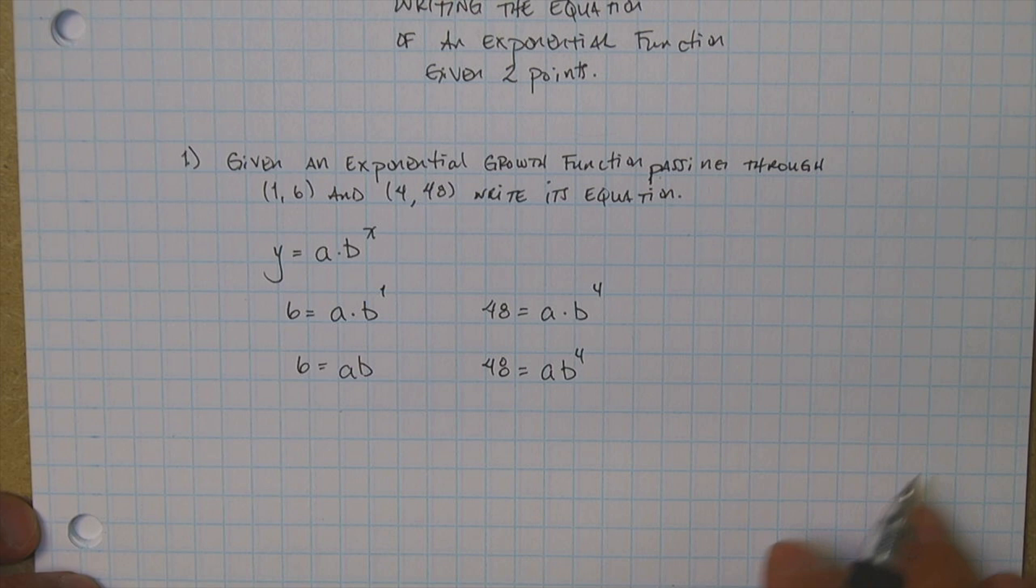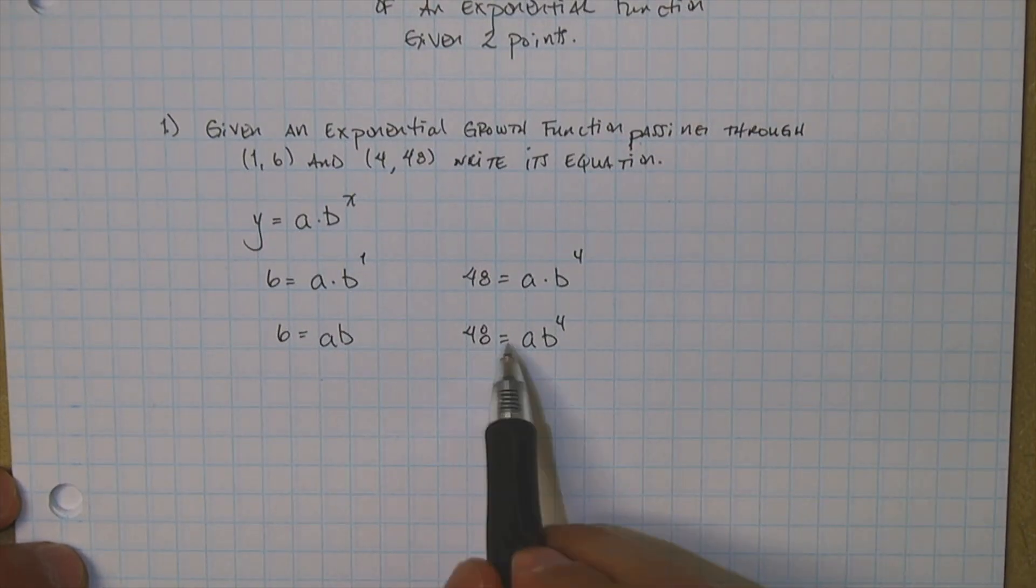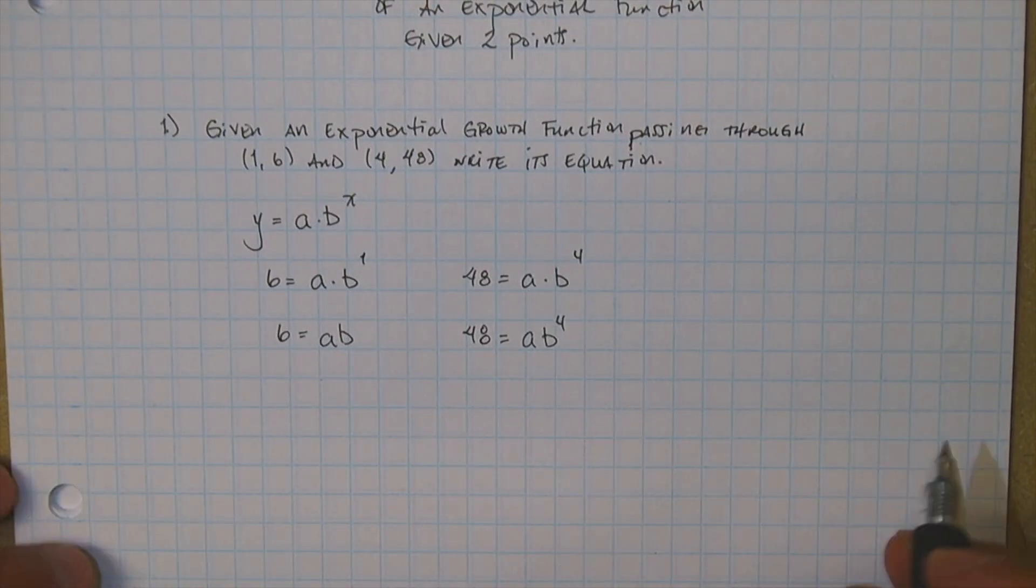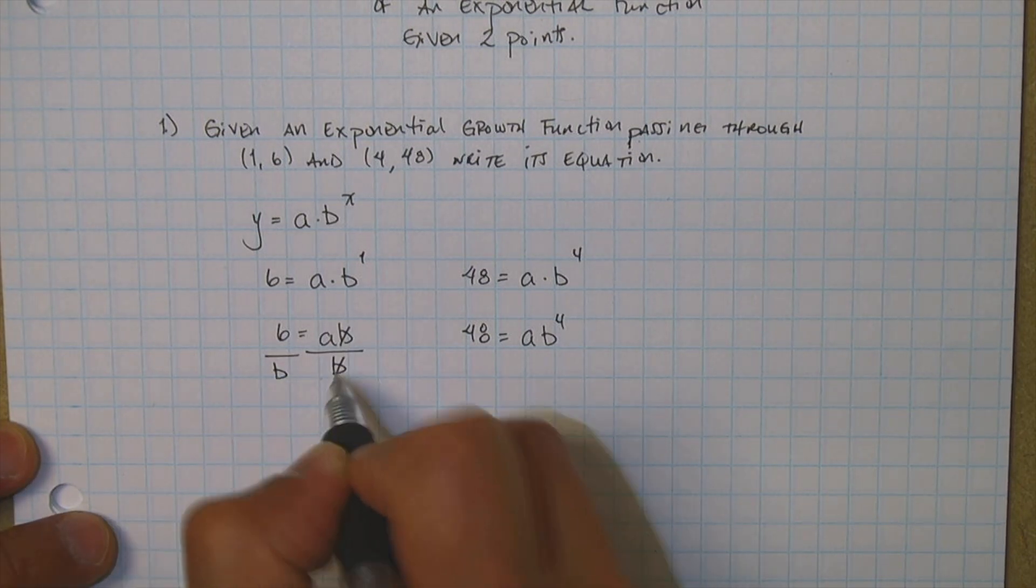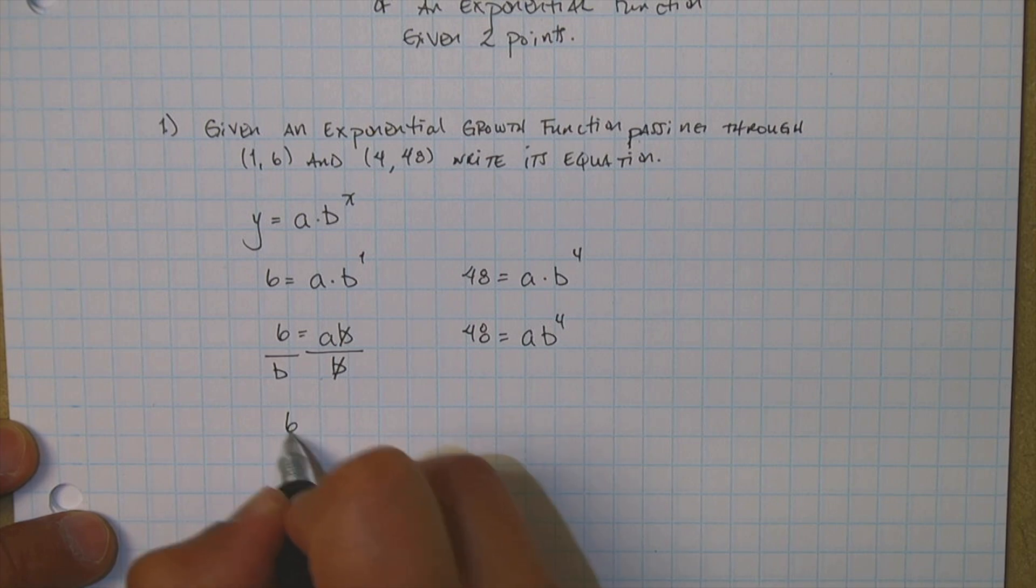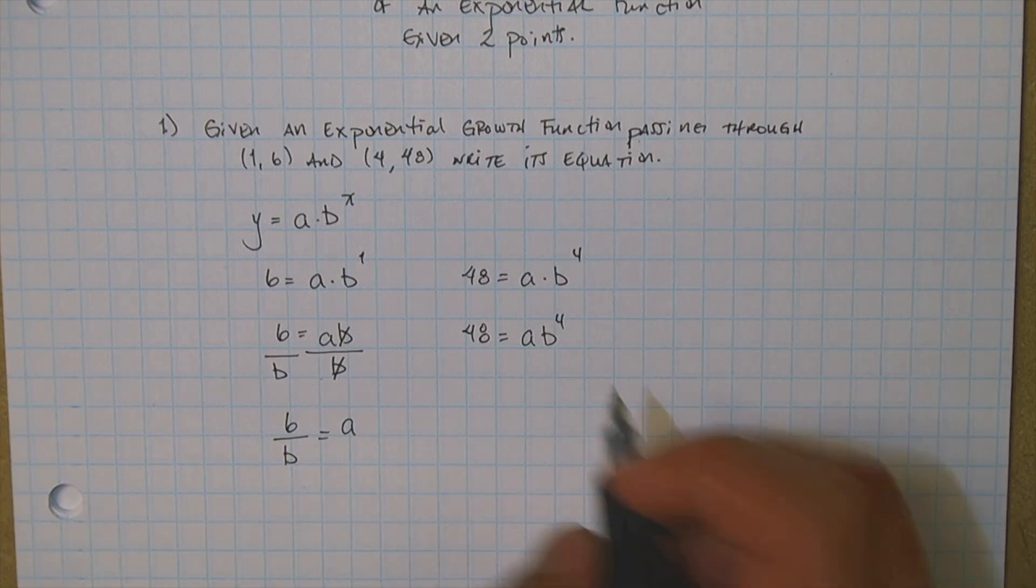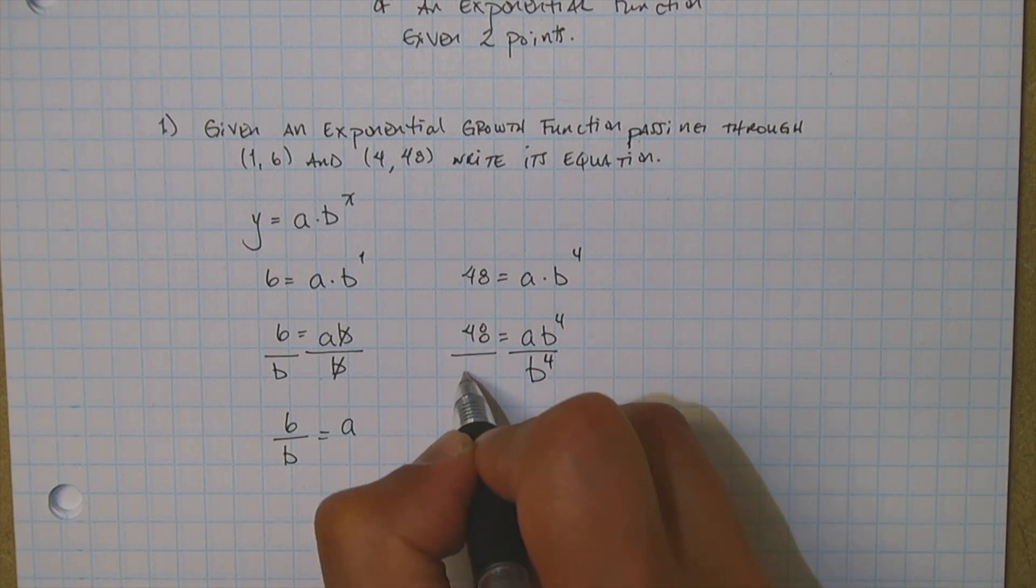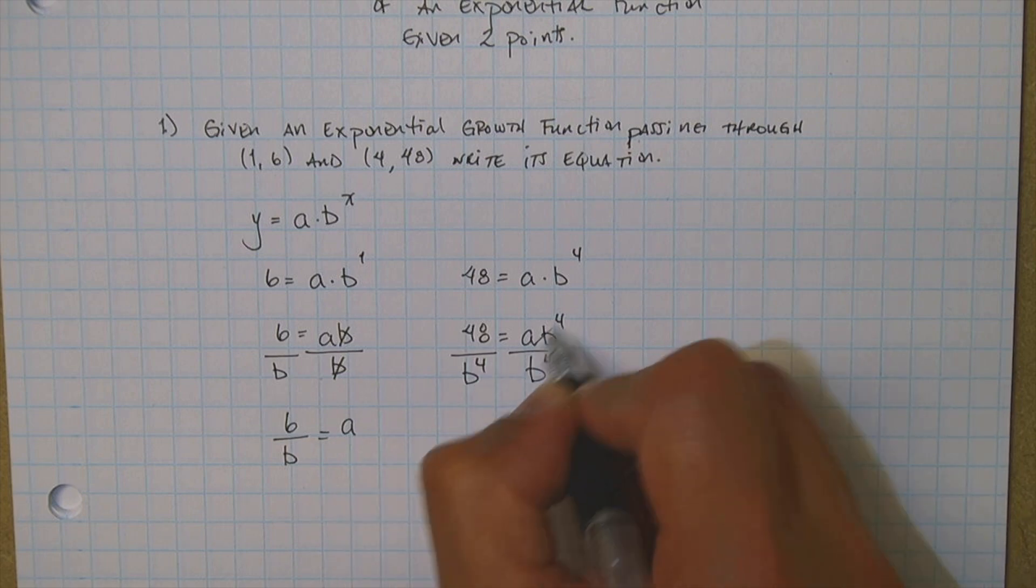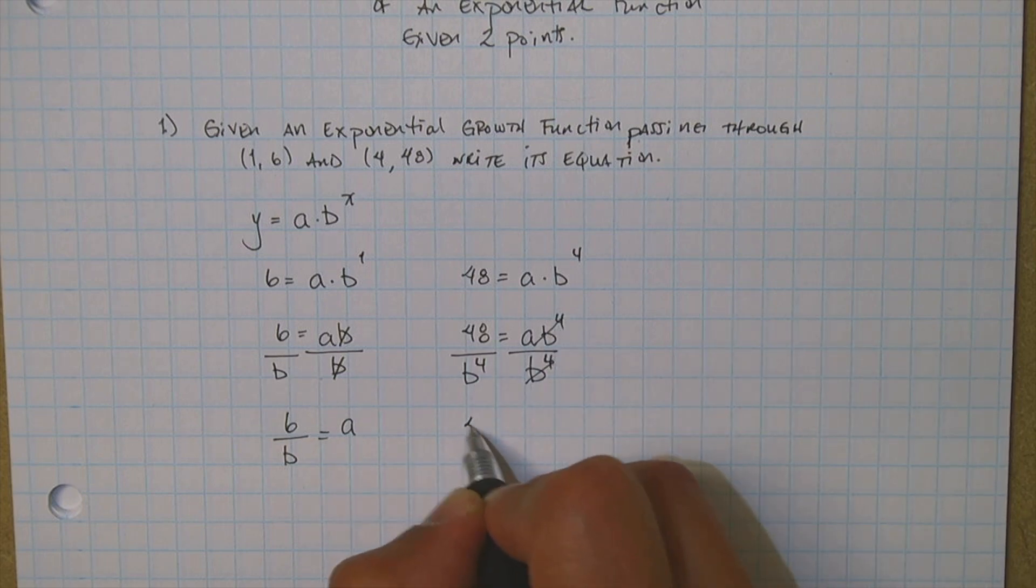Now what you're going to do is solve for one of these variables, and then you're going to set it equal to each other. So watch what I do. I'm going to divide by the letter b. That's going to simplify, and so you're left with 6 divided by b is equal to a. Over on this side we're going to do much the same. We're going to divide by b to the fourth. That's going to simplify right here. You're going to be left with 48 divided by b to the fourth.